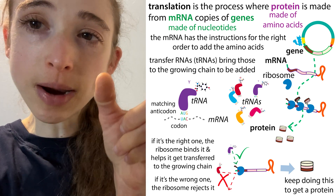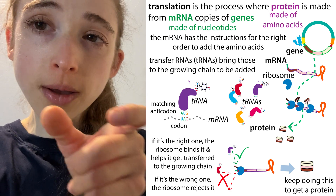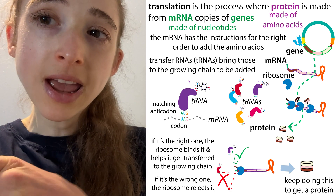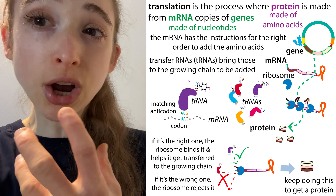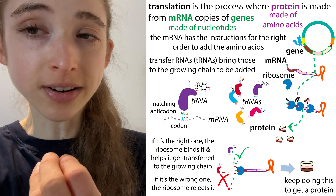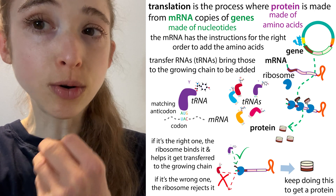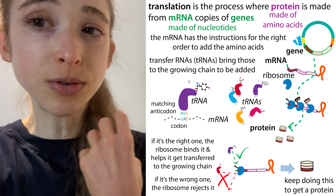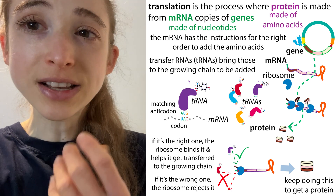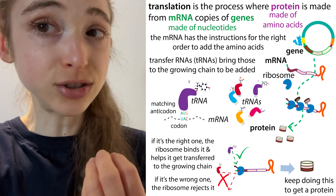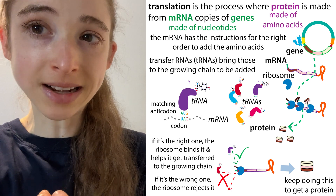The ribosome is going to travel along codon by codon, and what's going to be happening is that the cognate tRNA — the tRNA with the corresponding or correct amino acid — is going to bring it to the ribosome to be added.